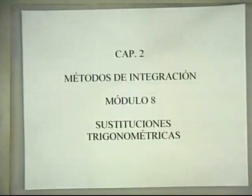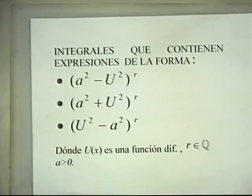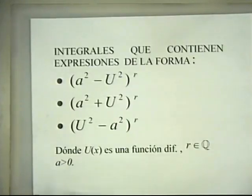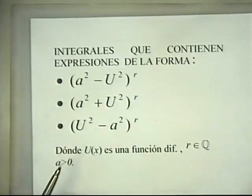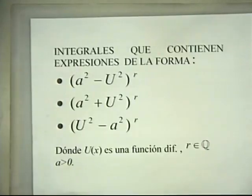Vamos a continuar hoy con el capítulo 2, los métodos de integración. Vamos a desarrollar en este módulo el módulo 8, conocido como las sustituciones trigonométricas. En algunas ocasiones el integrando contiene alguna de las expresiones a² menos u² a la r, a² más u² a la r, o u² menos a² a la r. Siendo u una función diferenciable, r un número racional y a una constante positiva.